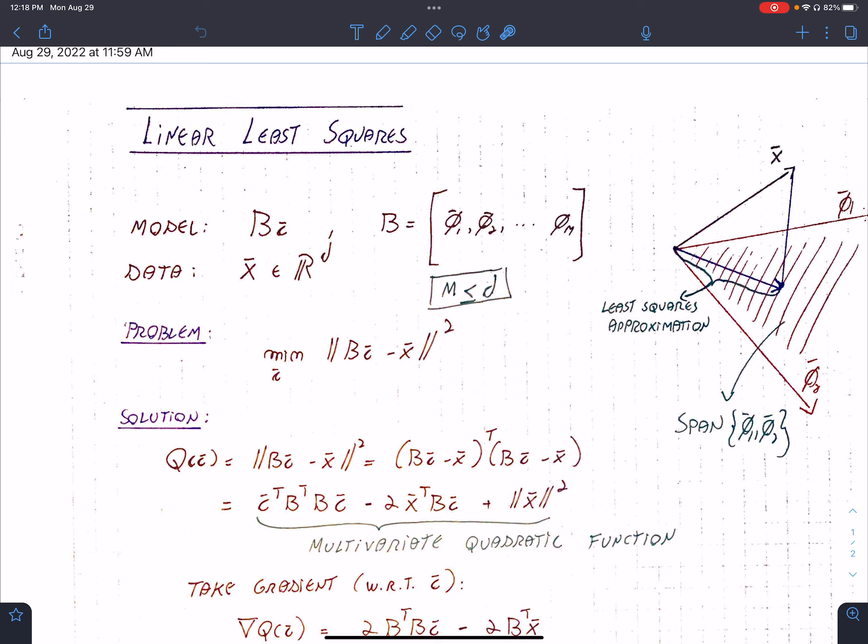And we're going to solve this as a minimization problem, where we're going to sum the squared error between each of the entries of this vector and this vector. We're going to subtract these two vectors and sum the individual differences.